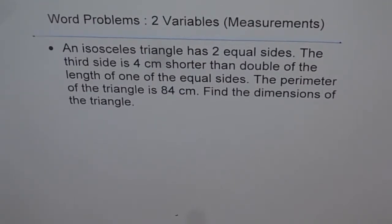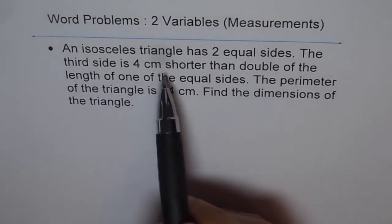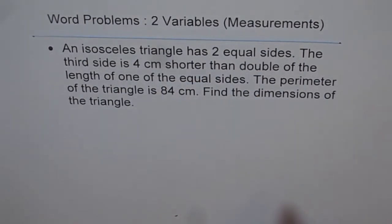Here is another word problem with a geometric shape, this time an isosceles triangle. The question is: an isosceles triangle has two equal sides. The third side is 4 cm shorter than double the length of one of the equal sides. The perimeter of the triangle is 84 cm. Find the dimensions of the triangle.